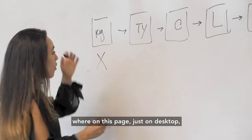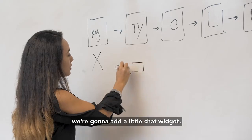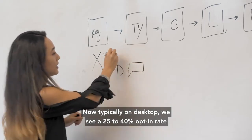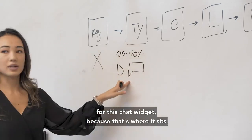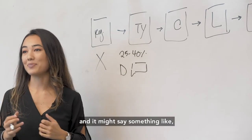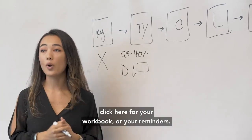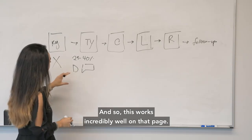So now we're going to move on to the thank you page where on this page, just on desktop, we're going to add a little chat widget. Typically on desktop, we see a 25% to 40% opt-in rate for this chat widget because that's where it sits at the bottom right corner of the page and it might say something like click here for your workbook or your reminders. And so this works incredibly well on that page.